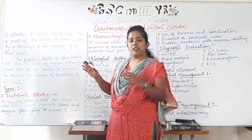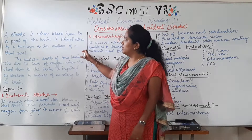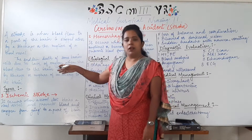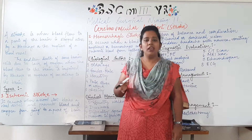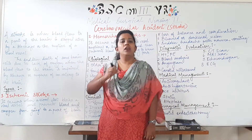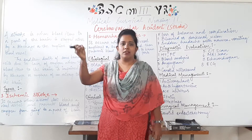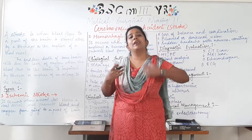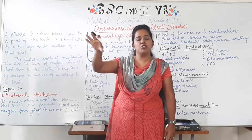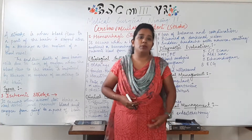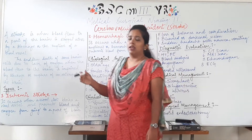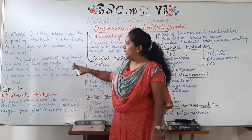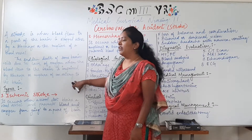There are two definitions of stroke. First: a stroke is when the blood flow to a part of the brain is stopped by either a blockage or a rupture of a blood vessel — specifically an artery. A clot in the artery prevents blood from passing through, or a rupture causes hemorrhage. Second definition: stroke is the sudden death of some brain cells due to lack of oxygen when blood flow to the brain is impaired by blockage or rupture of an artery.